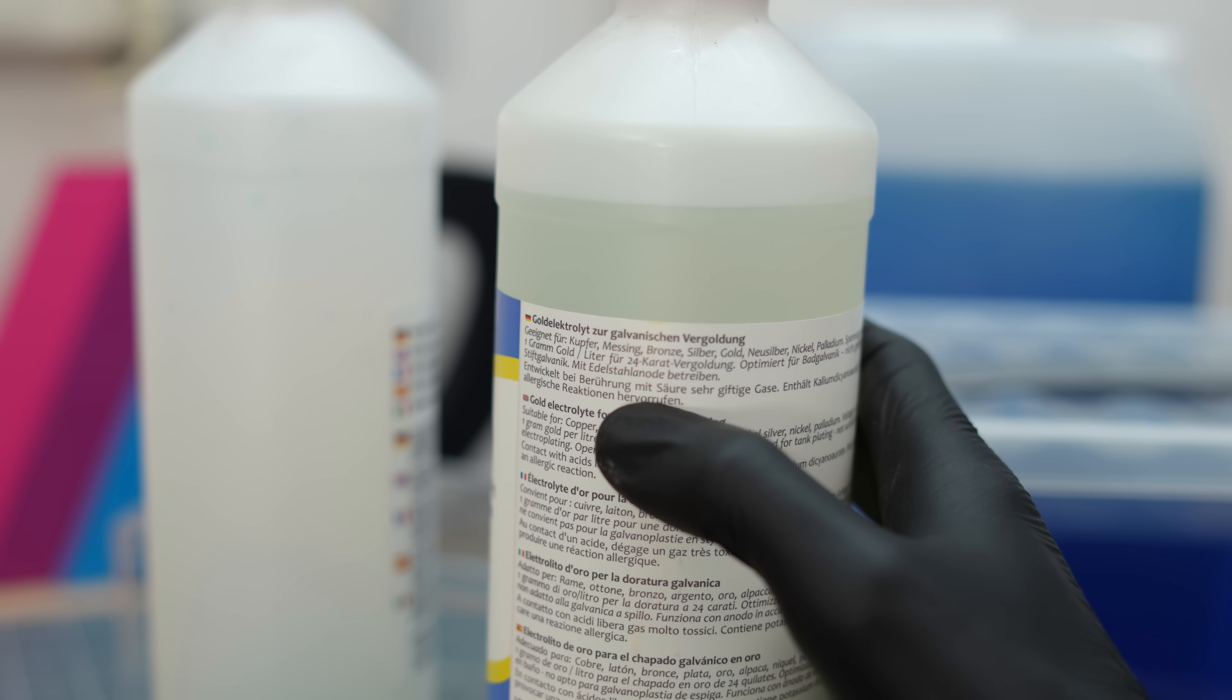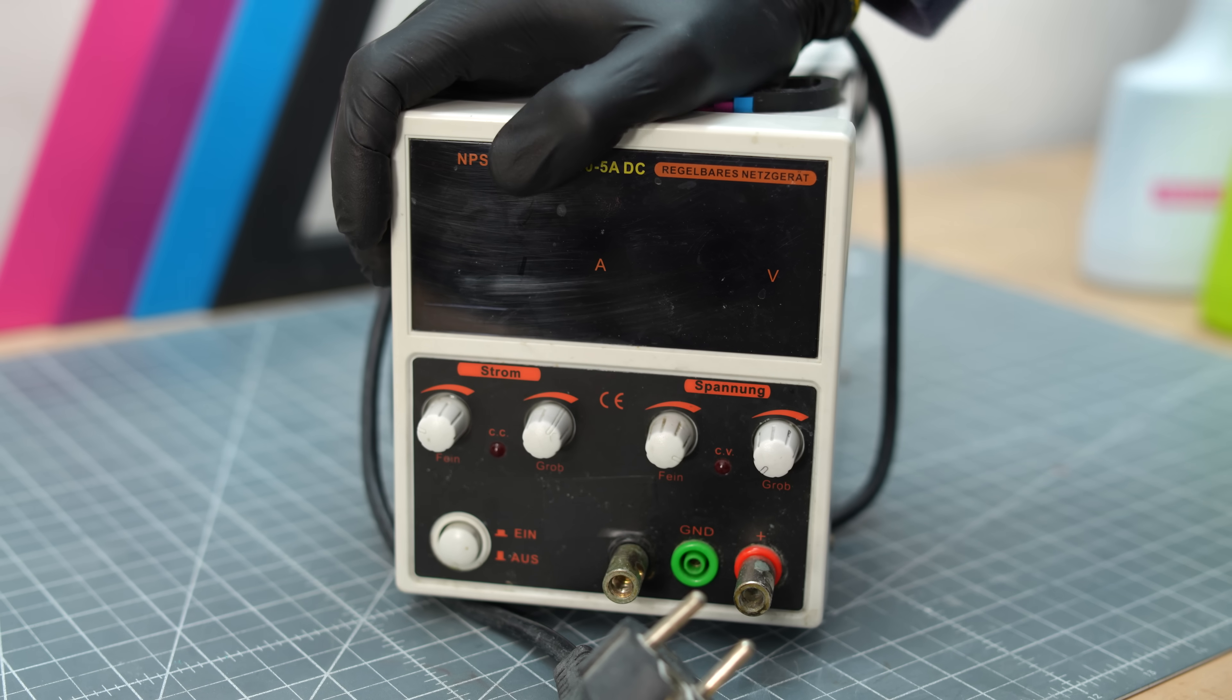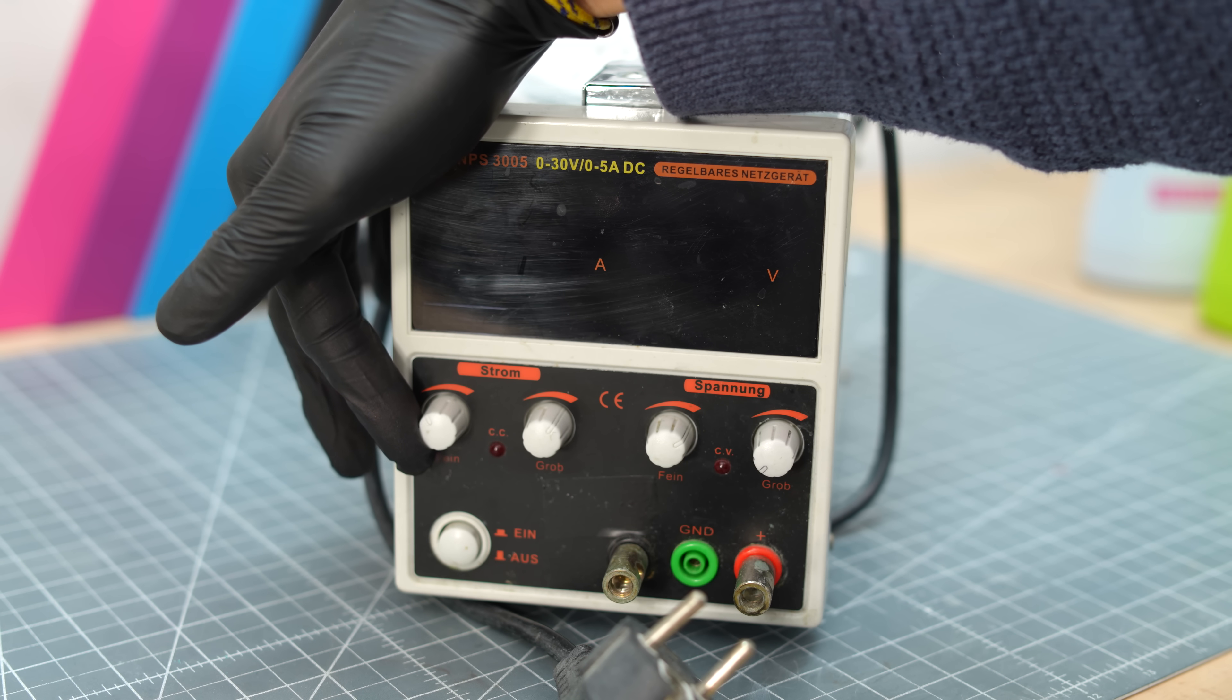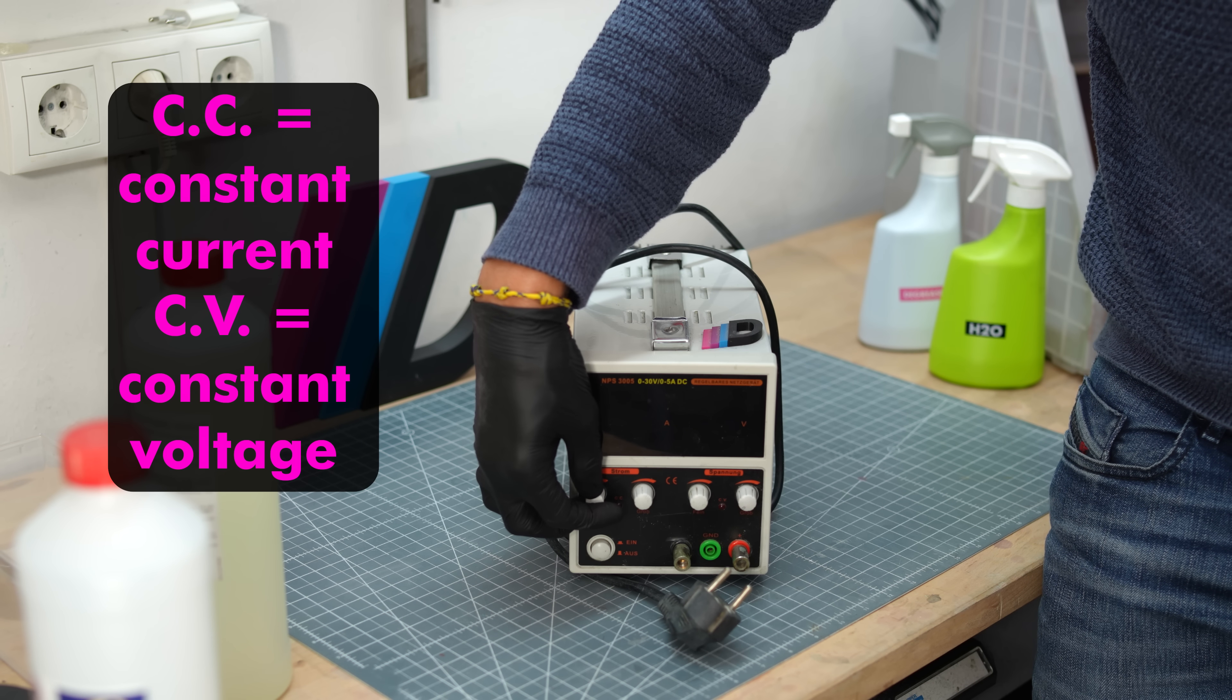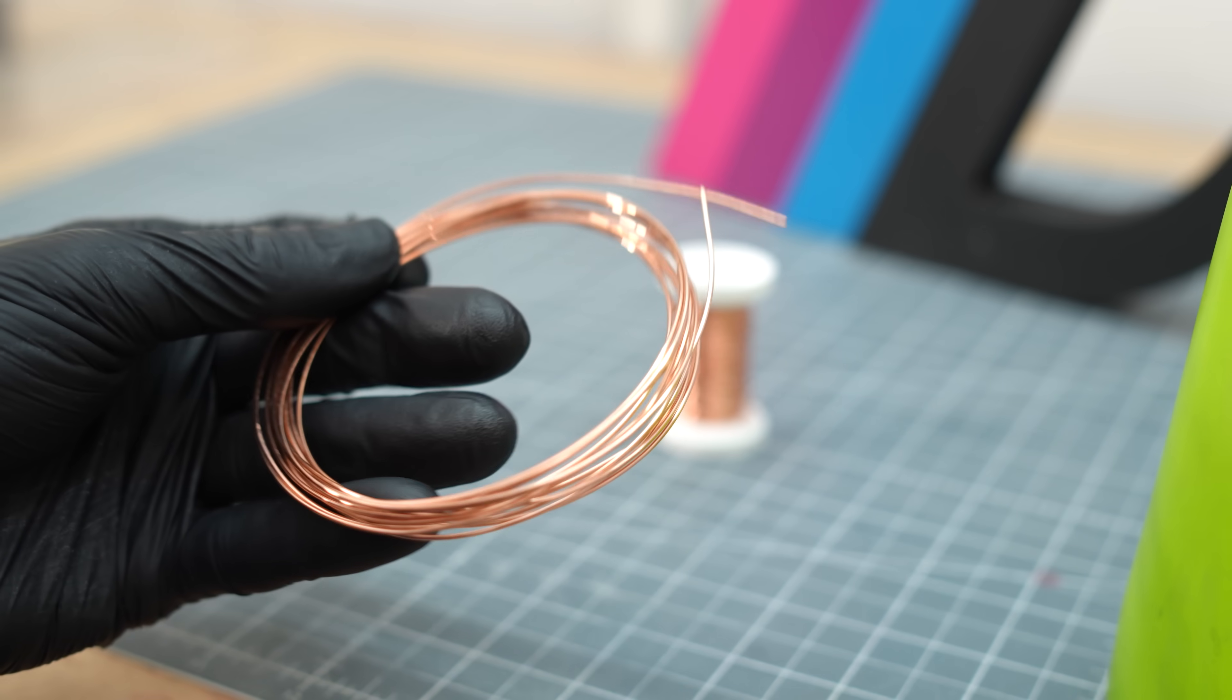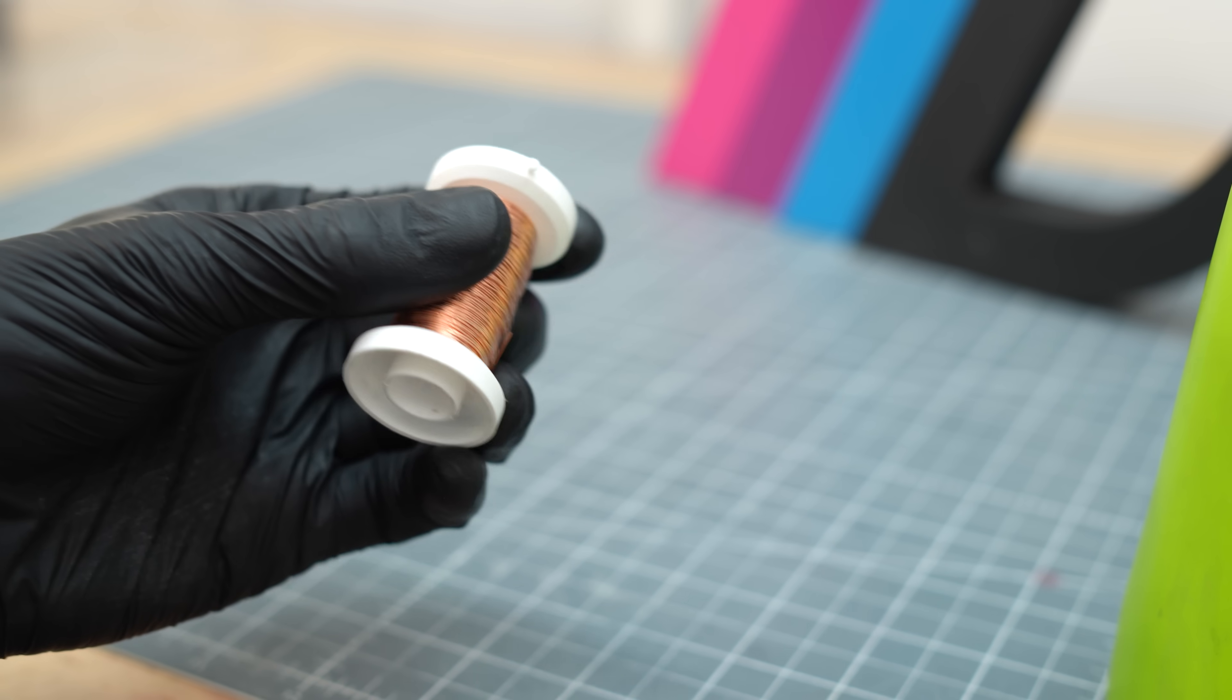My power supply for this electrochemistry is a simple lab power supply that can regulate voltage. I use it in constant current mode and don't bother with the voltage at all. I use copper wire to attach the objects, connecting the negative pole of the power supply to these.